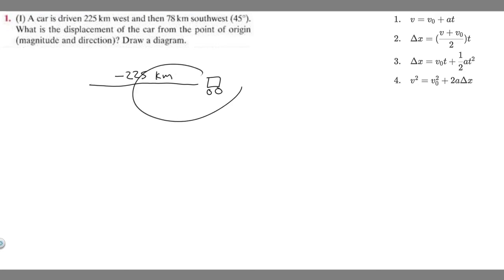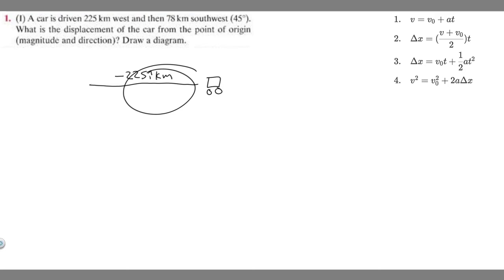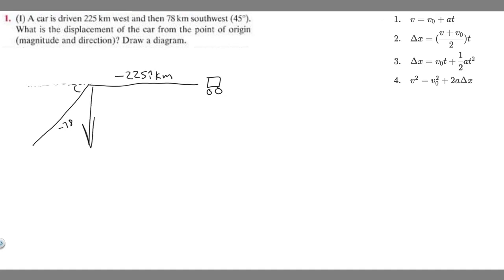So it's going to be minus 225 kilometers. When doing vectors, you want to label travel in the x direction by adding an i — this represents that we're going in the x direction. So we go minus 225 kilometers west, and then 78 kilometers southwest at 45 degrees. That vector gets labeled with a j, because we're going in the y direction — so minus 78j kilometers, and this angle is 45 degrees.